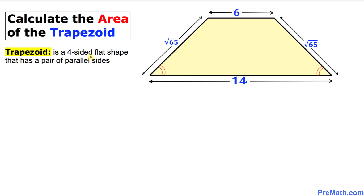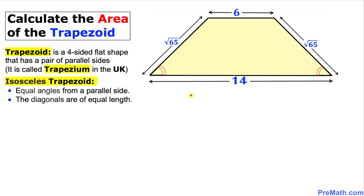A trapezoid is a four-sided flat shape that has a pair of parallel sides. Our given figure is an example of an isosceles trapezoid. In an isosceles trapezoid, the two diagonals always have equal length.